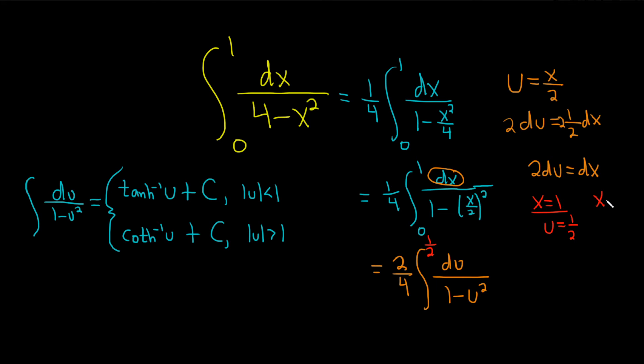And then when x equals 0, u is equal to 0 over 2, which is 0. Basically, I'm just plugging it in here into this top one. So our lower limit is 0. So now we see what's going on.